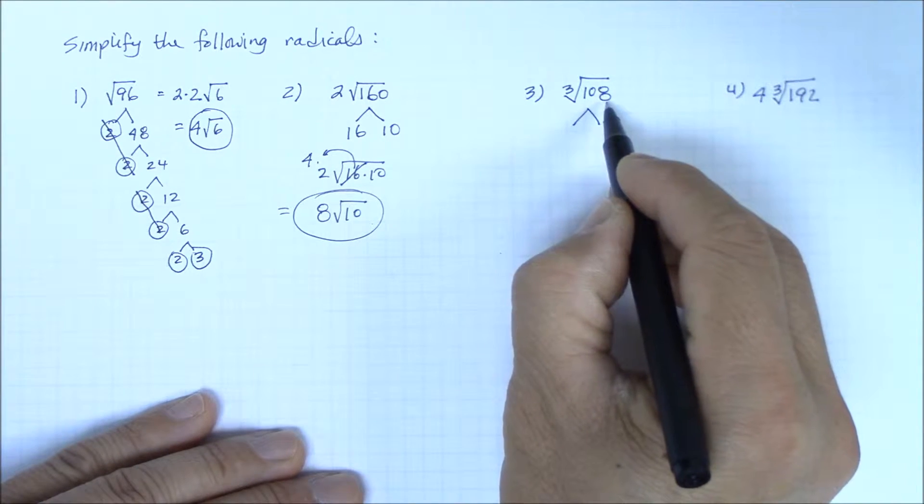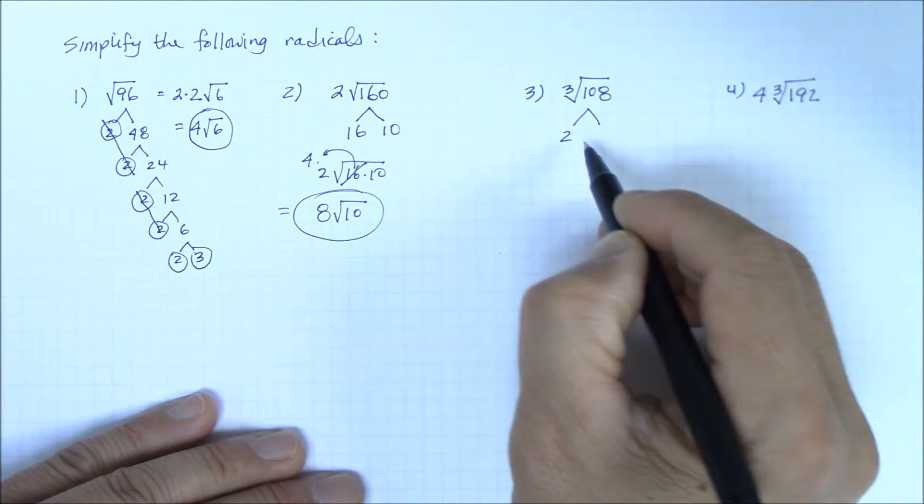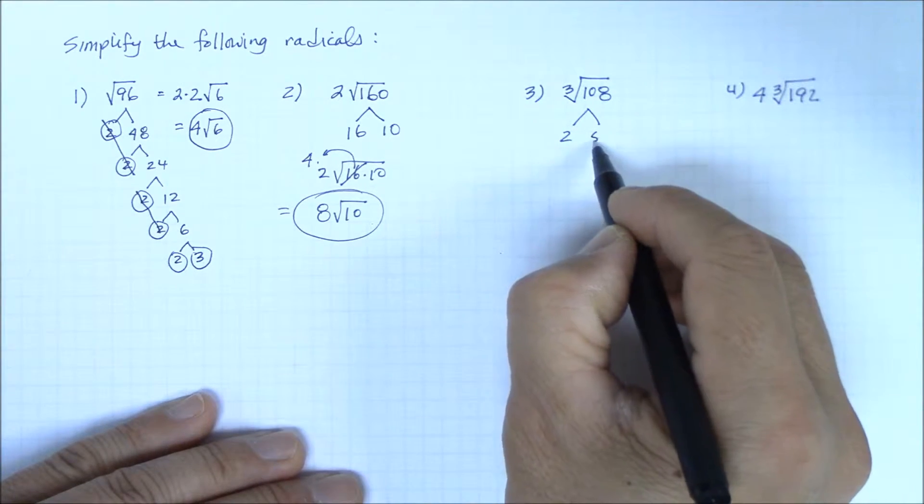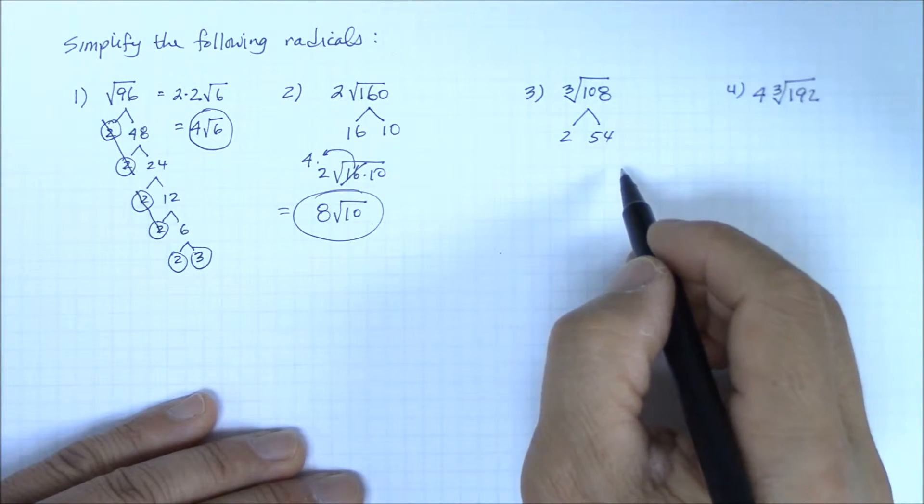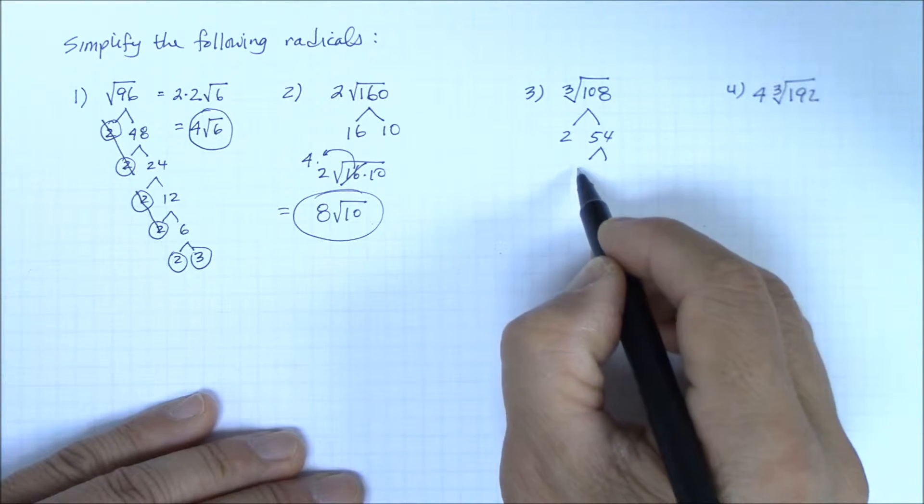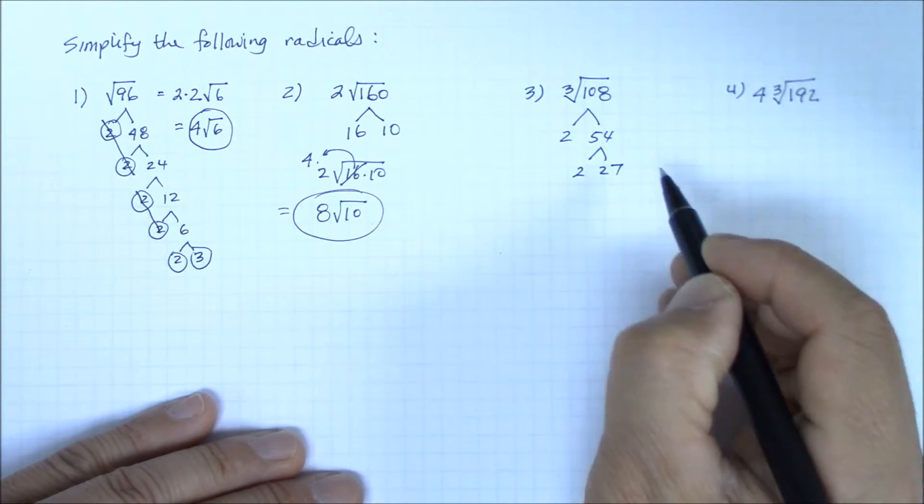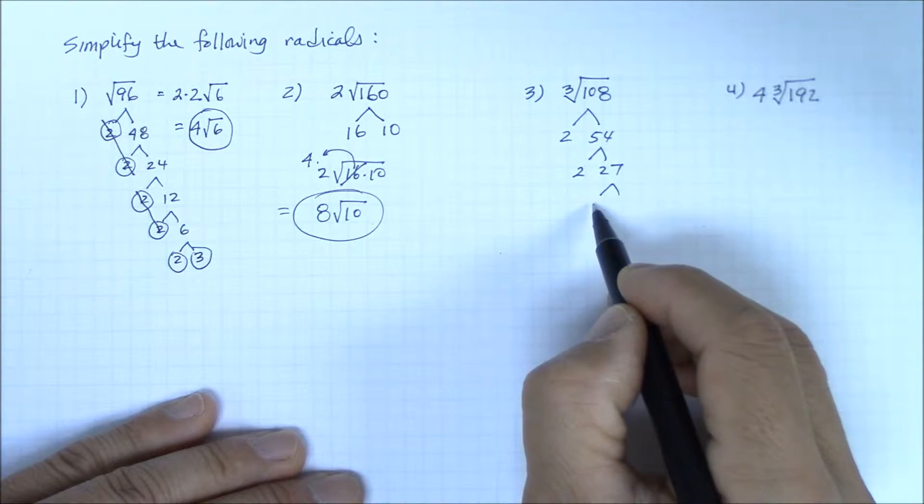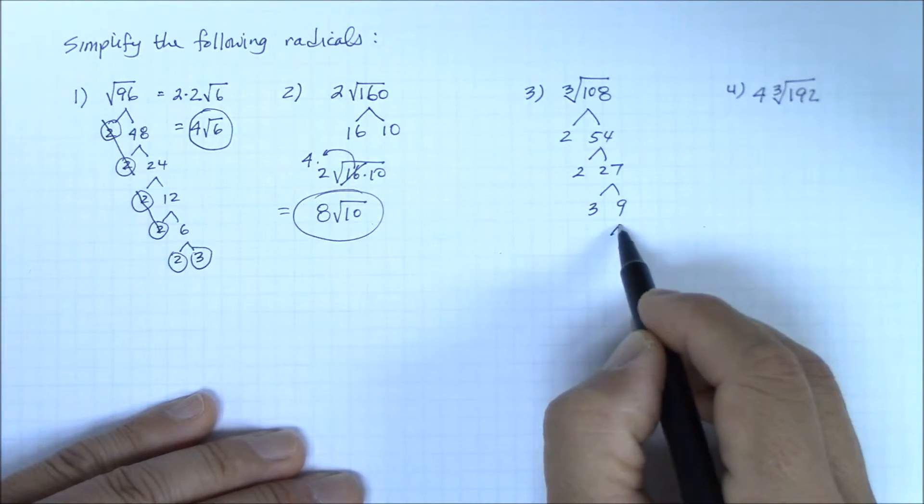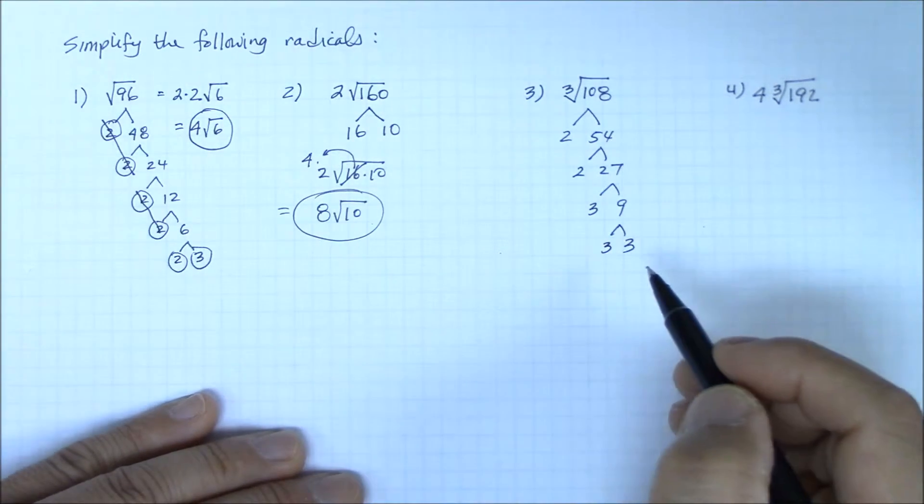Since 108 is an even number, let's start with the most basic prime number, which is 2. 2 goes into 108 54 times. 54 is 2 times 27, and 27 is 3 times 9, and 9 is of course 3 times 3.